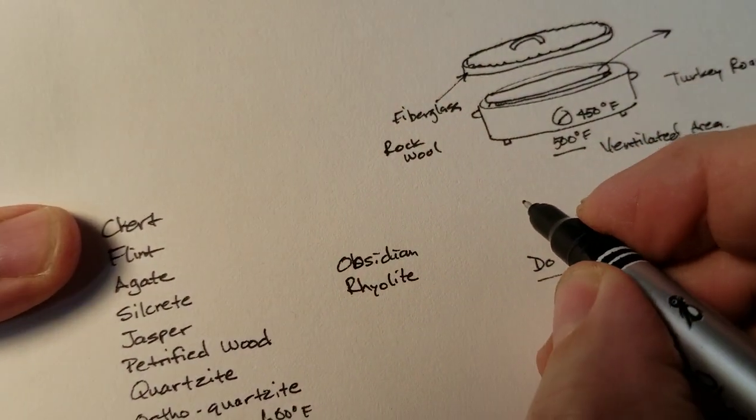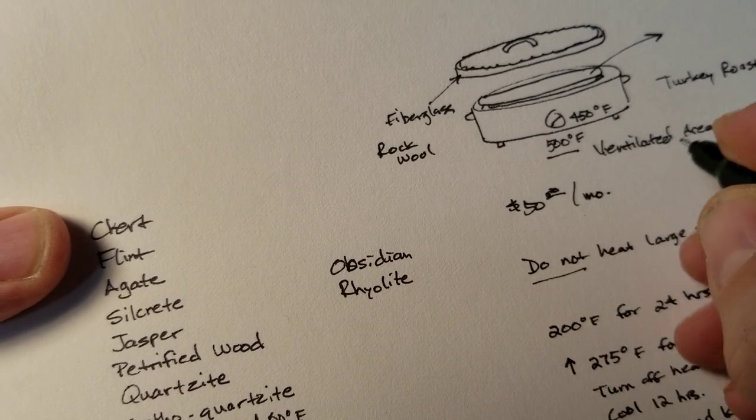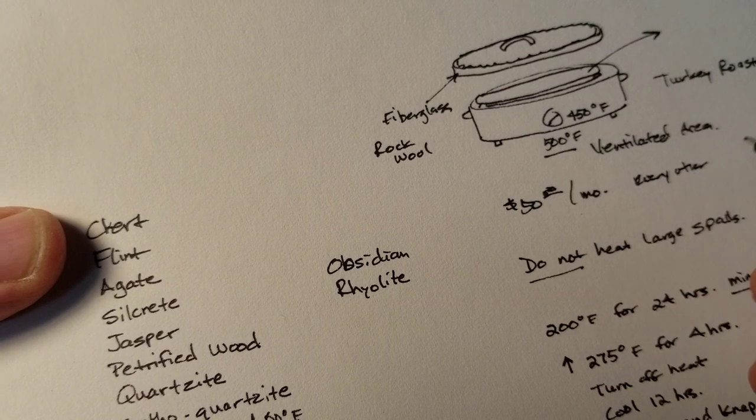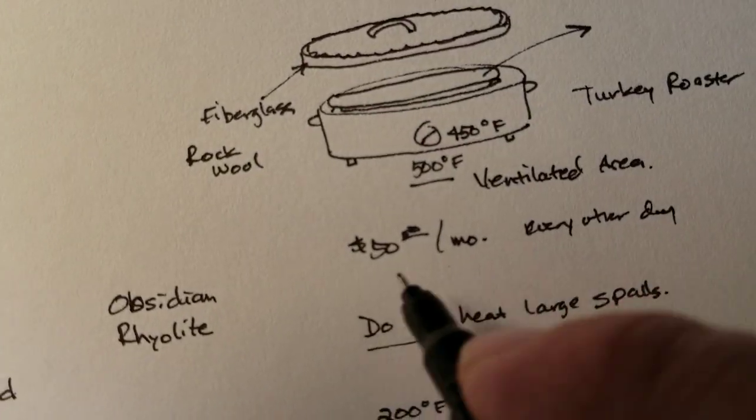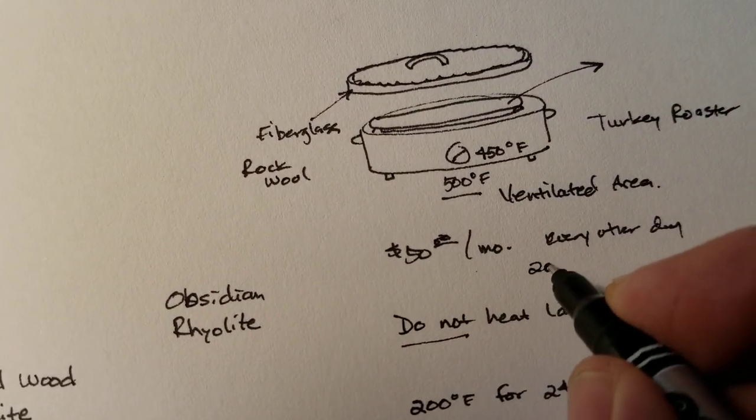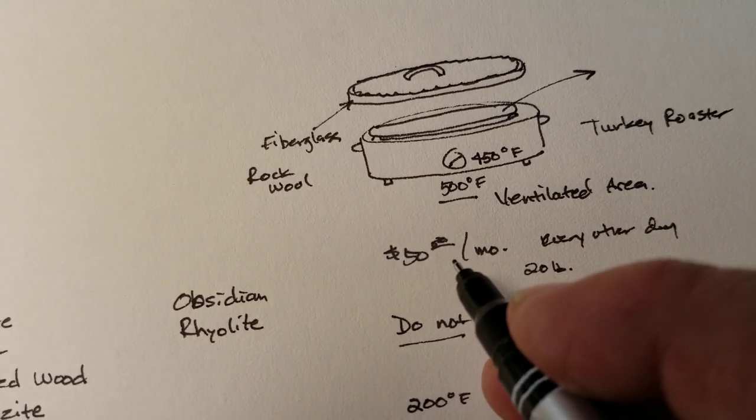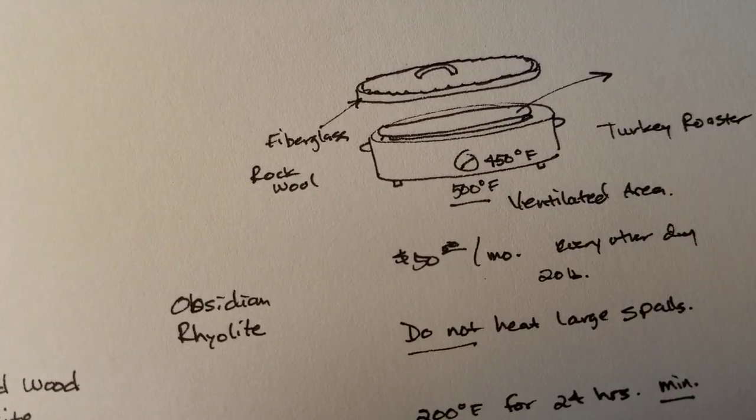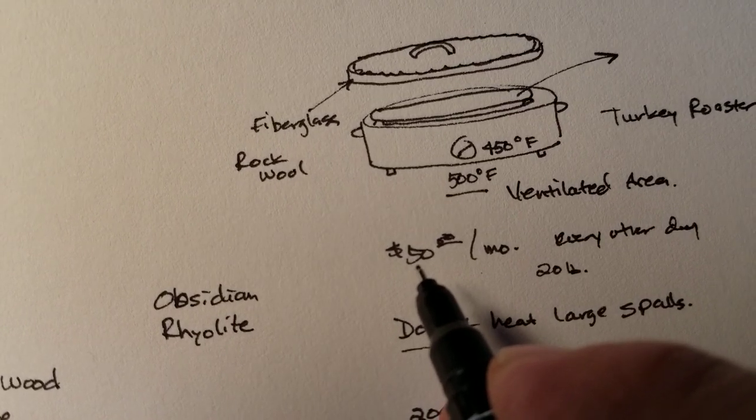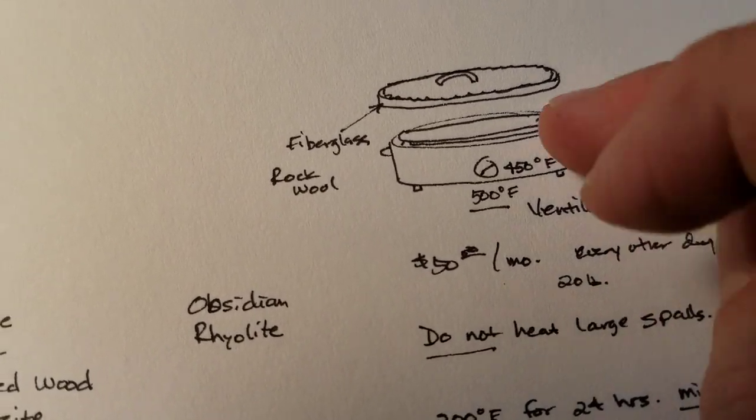One more thing. I think it cost me, back when I kept track of this, it cost me $50 a month if I heat treat every other day. When I was heat treating a lot of material. And I think I can heat 20 pounds at a time. So you got to keep that in mind. There is an expense related to this operation. And this was five or ten, five years ago, I guess, or maybe more. It could be higher now depending on your area. So there is some expense in using electricity to heat.